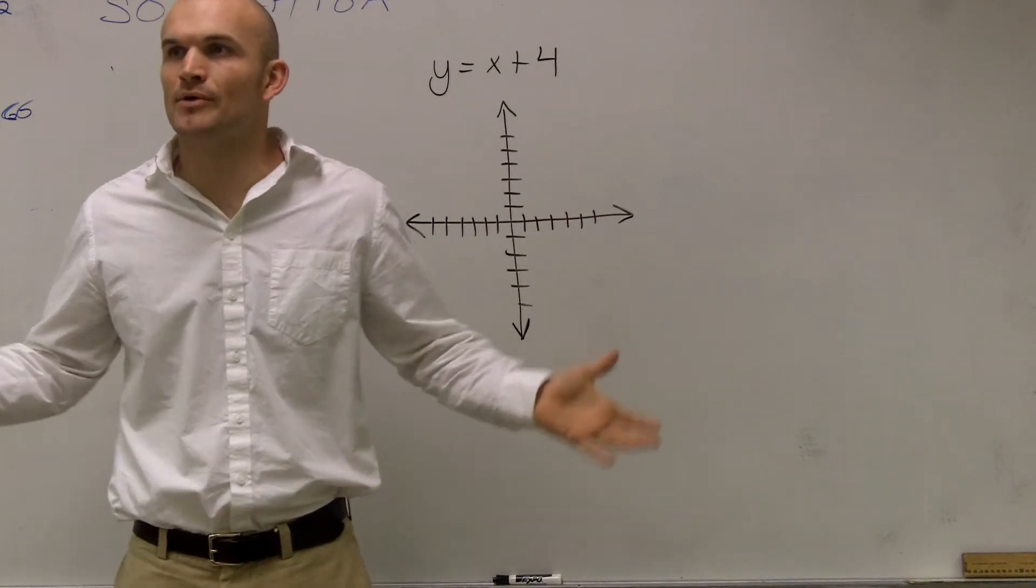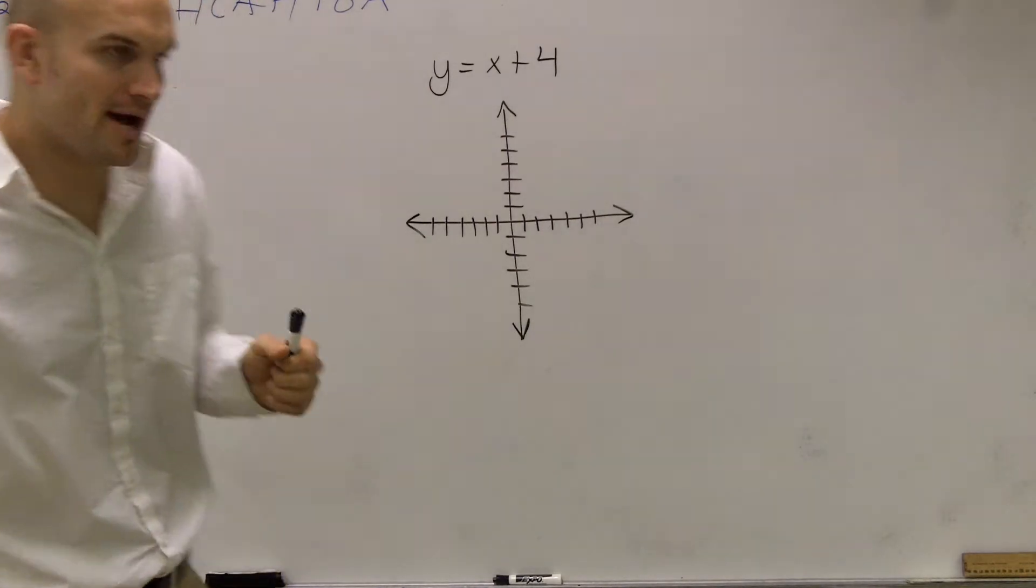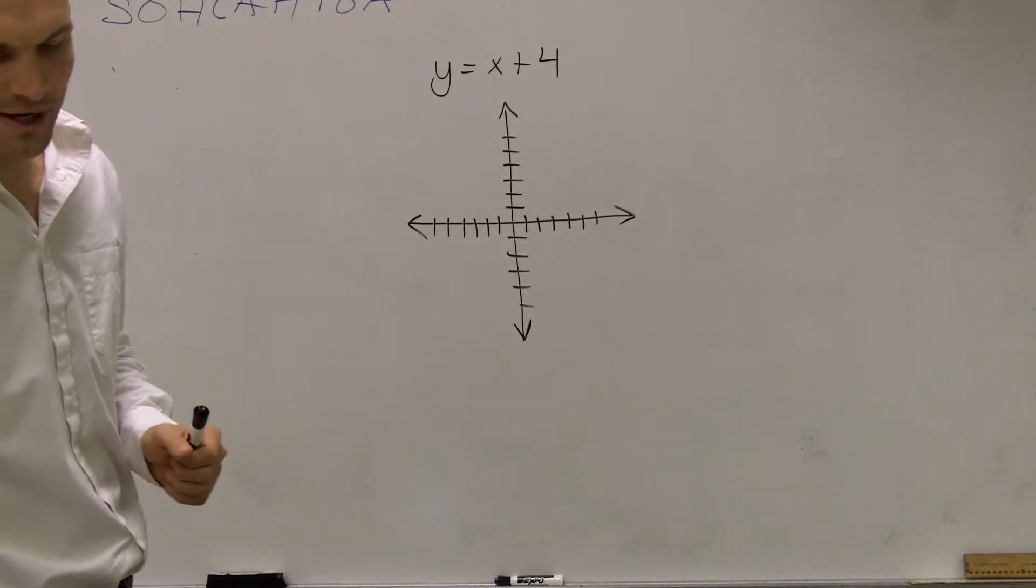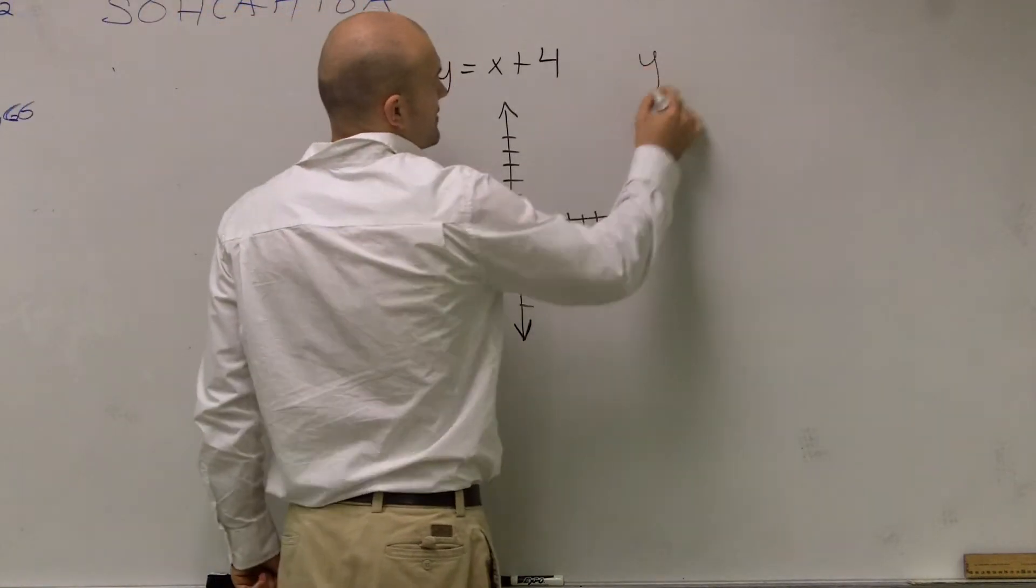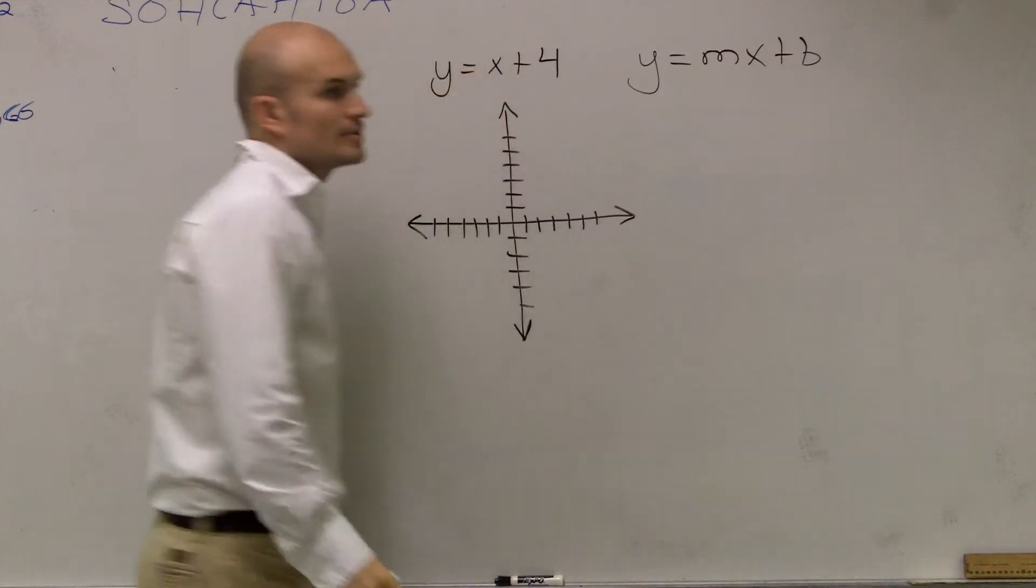So to solve, to graph this problem, guys, what we've been talking about for your homework was we wanted to learn a special way to graph, and that special way was slope-intercept form, meaning we wanted to graph when we have an equation in the form of y equals mx plus b.